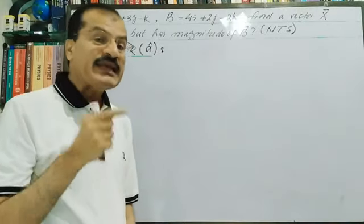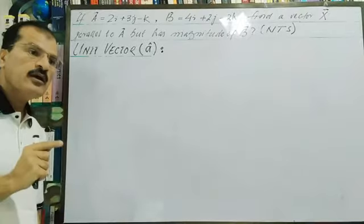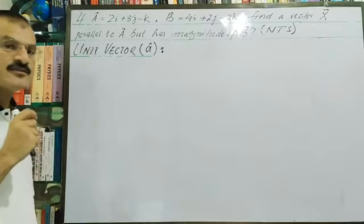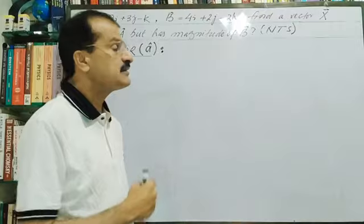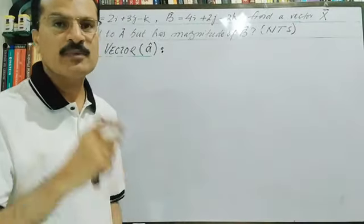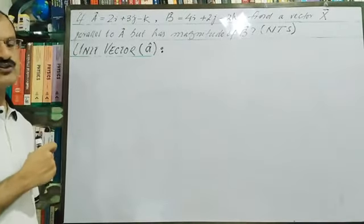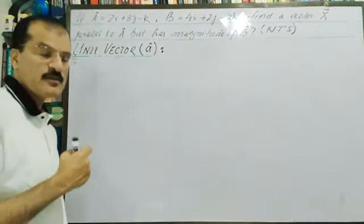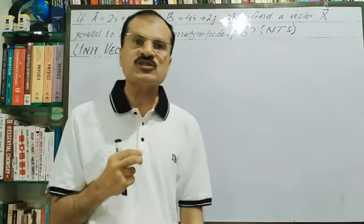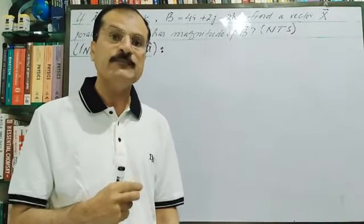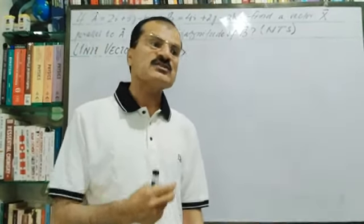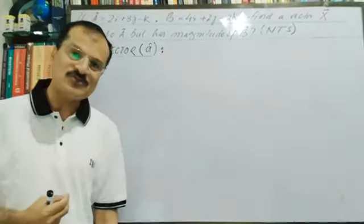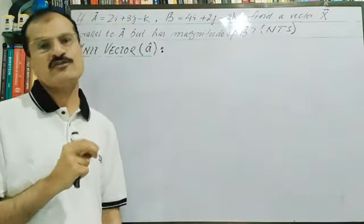To solve this problem, we need a very important concept — the unit vector. There are four main kinds of vectors used in physics: the null vector, the free vector, the unit vector, and the position vector.